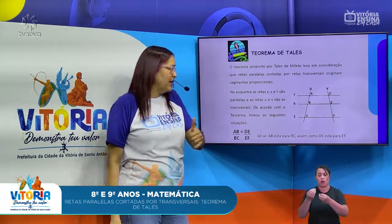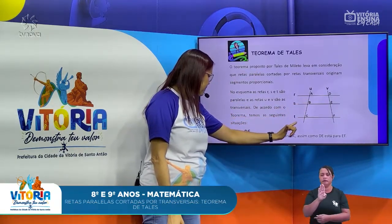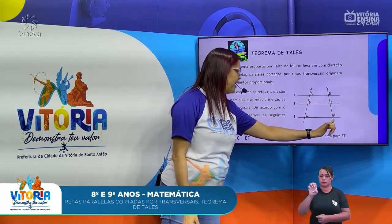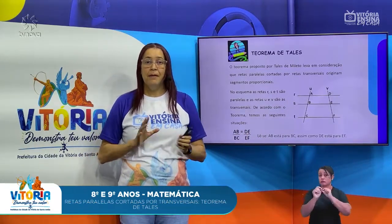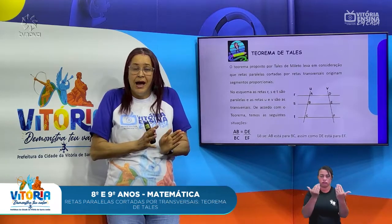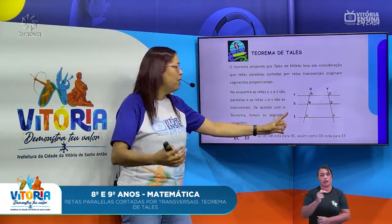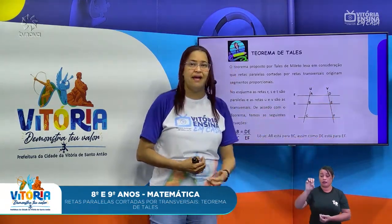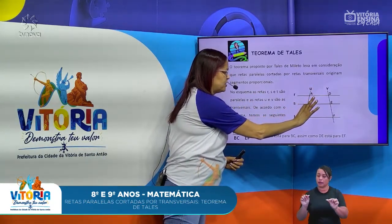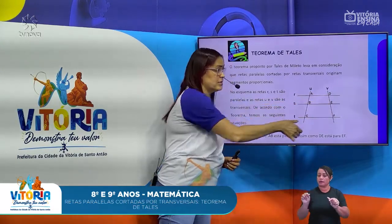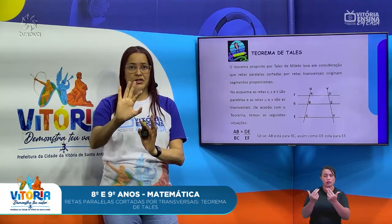De acordo com o Teorema de Thales, AB está para BC assim como DE está para EF. Toda vez eu vou fazer essa relação. Ele diz que há uma proporcionalidade — eles são proporcionais. Ou seja, AB está para BC, que é igual a DE que está para EF. Então, esse segmento está para este segmento, assim como esse está para esse. É importante perceber essa relação de semelhança e de proporcionalidade.